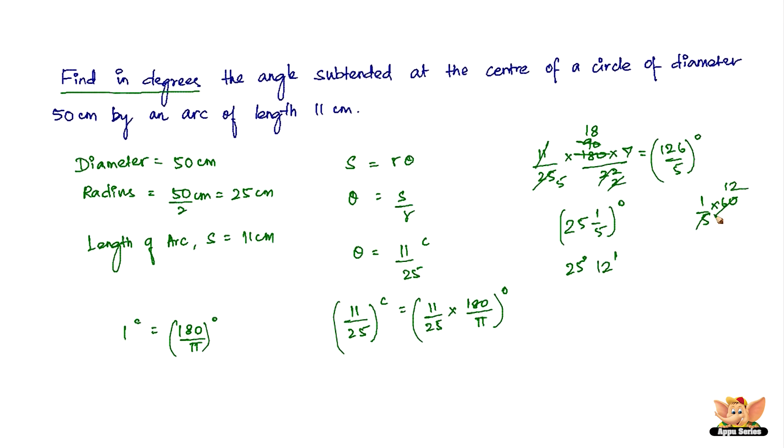Now since there was no remainder here, there is no need for a seconds side. In case it was a mixed fraction, we would have to convert that fraction into seconds, which we didn't have to do in this problem because 60 got cancelled by 5 in a perfectly whole number way. So it's just 25 degrees and 12 minutes exact.